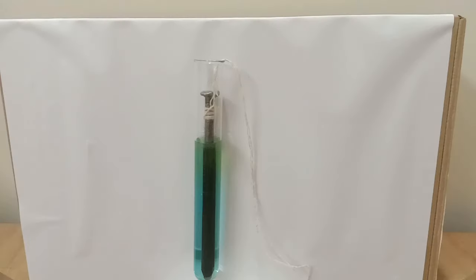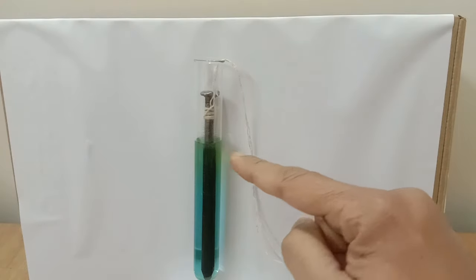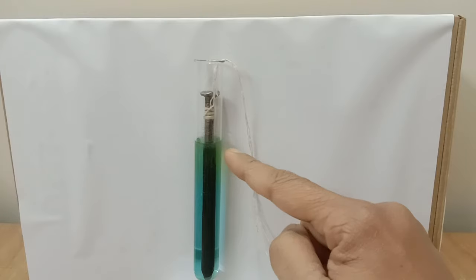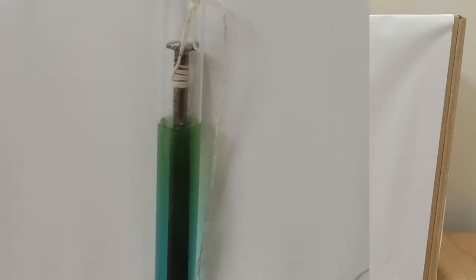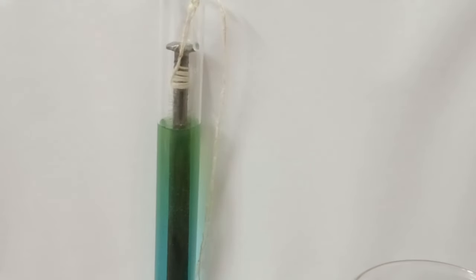After 10 minutes, you can see the upper part of the copper sulphate solution which was blue in color is now appearing green. This green color is due to the formation of iron sulphate.